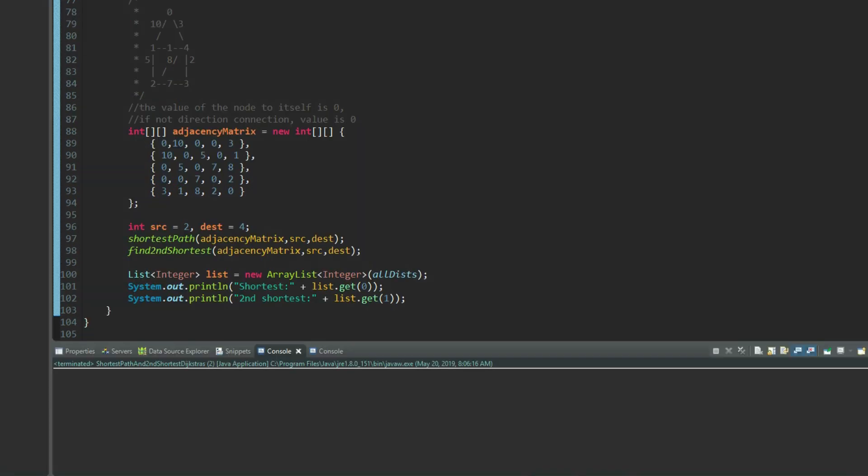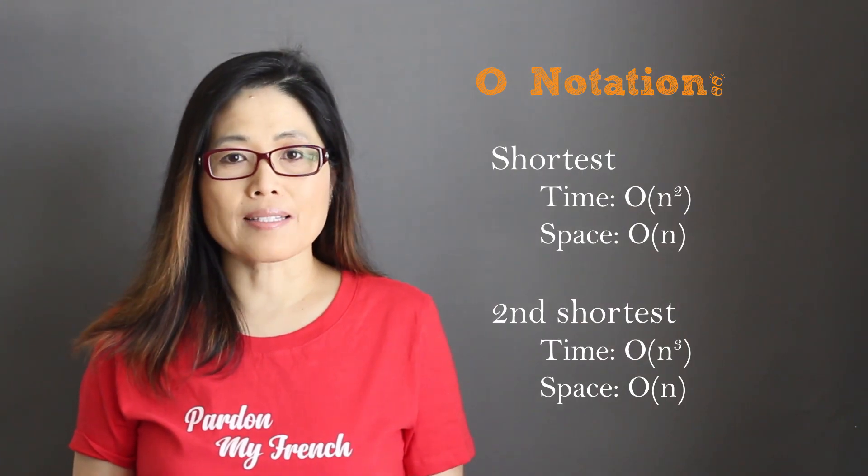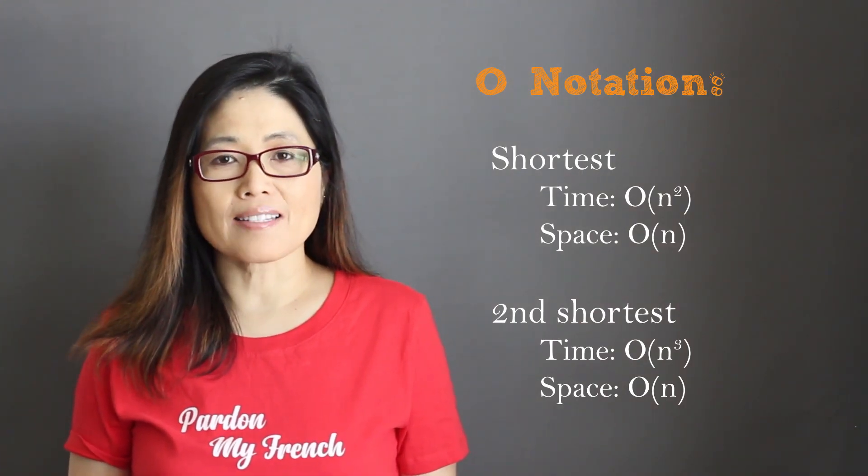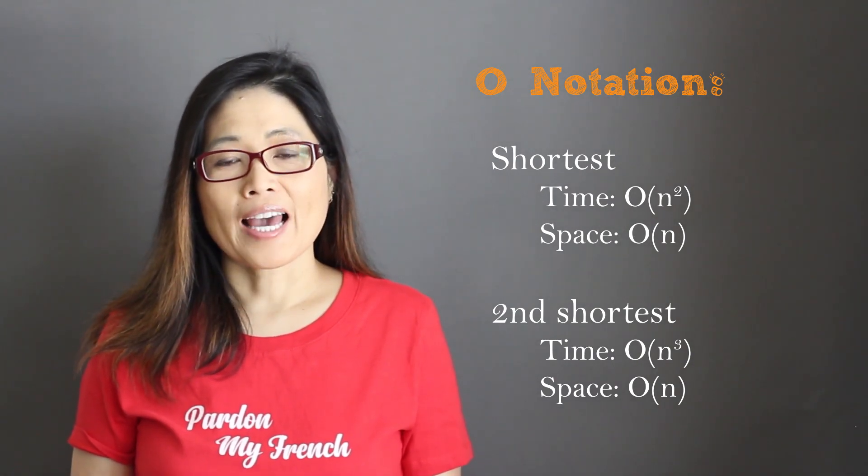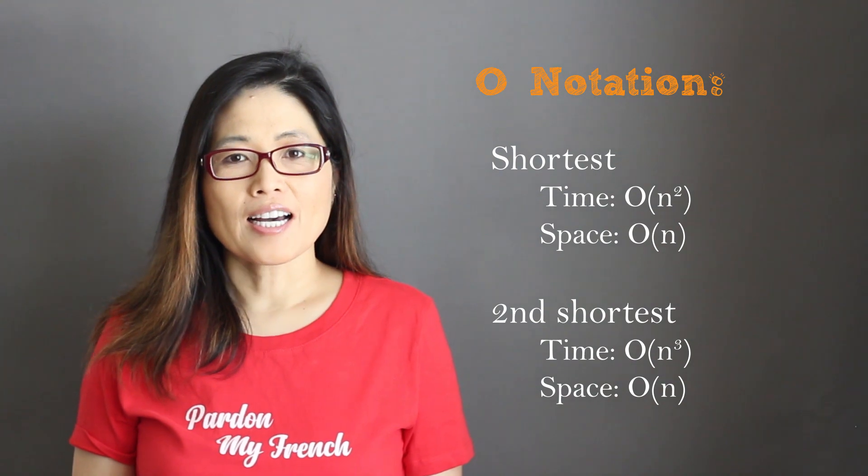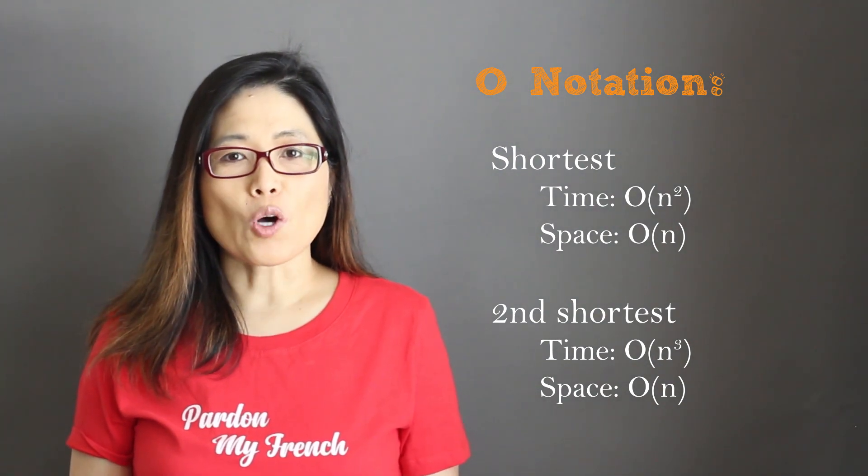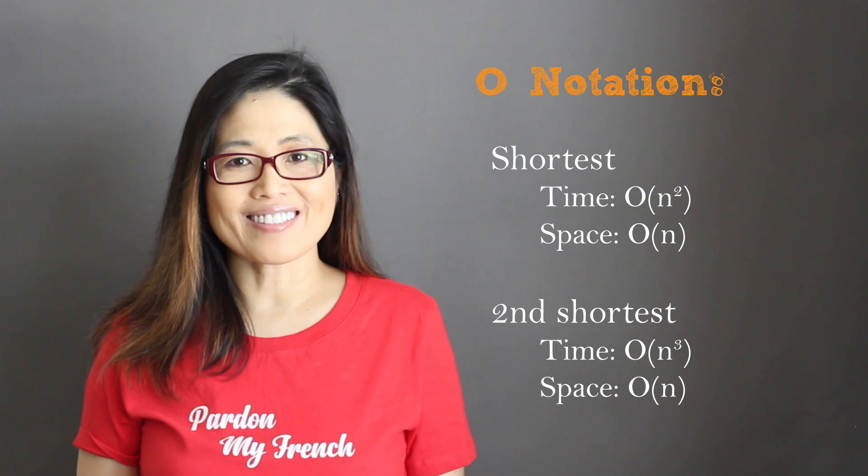Let's run the code. The shortest distance is 6. The second shortest distance is 8. From the previous walkthrough, we know it is correct. The time complexity of shortest distance is O(n²). The space complexity is O(n). To get the second shortest, the time complexity is O(n³). The space complexity is O(n).